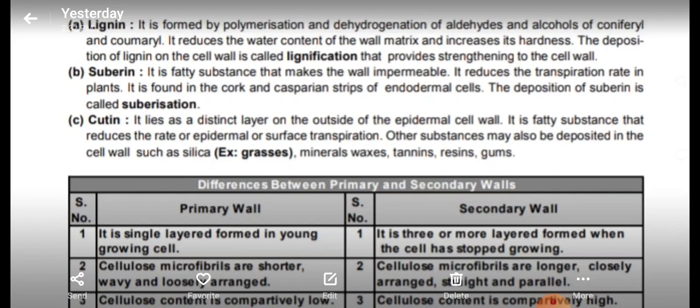Suberin deposition occurs on the cell wall. It is a fatty substance that makes the wall impermeable, meaning it does not allow water to escape. Suberin reduces the transpiration rate in plants, thus preventing water loss. It is found in cork and casparian strips of endodermal cells. The deposition of suberin is called suberization.